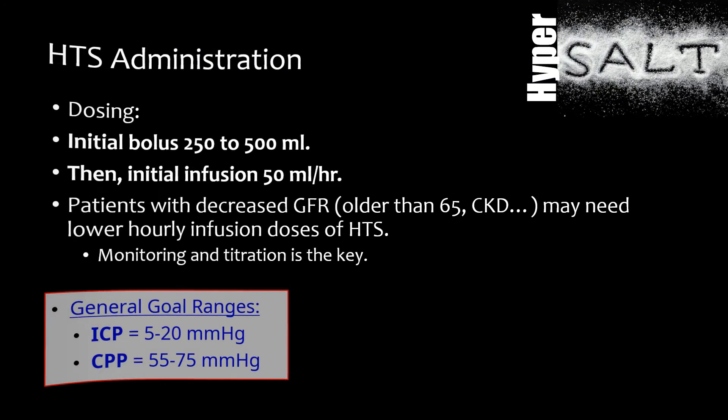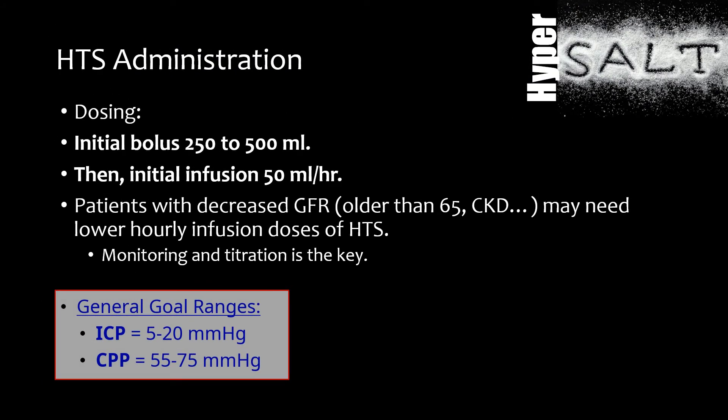The initial bolus can be 250 to 500 milliliters over 15 to 30 minutes, with an initial infusion of 50 milliliters per hour. Patients with decreased GFR — such as those older than 65, or those with renal disease — may need lower hourly infusion doses of hypertonic saline, such as half the hourly infusion dose. Every kidney is different and will need individualized adjustments.